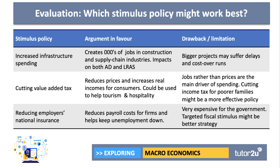What about cutting employers' national insurance? Interestingly, employers' national insurance is the largest single non-wage labour cost that most employers face. If you employ somebody on the average wage of around £25,000 a year, it costs about £2,500 in national insurance that the employer has to pay. So cutting that would reduce the payroll cost for firms and, in theory, help them keep more workers employed and keep unemployment down. That said, it's a very expensive option for the government. Perhaps a more targeted stimulus could be more effective — for example, a cut in national insurance if you employ younger workers, or a national insurance holiday if you spend money on retraining. Either way, there are arguments in favour of each of these fiscal stimulus policies and relevant limitations.